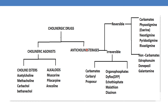Coming to anti-cholinesterases, which inhibit the activity of cholinesterase, they are of two types: reversible and irreversible. Coming to reversible anti-cholinesterases, they are again categorized into carbamates and non-carbamates.